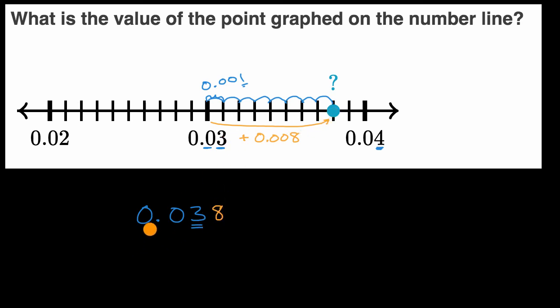So this point right over here is 0.038, or you could view this as 38 thousandths, because three hundredths is 30 thousandths. This is the value of the point graphed on the number line: 0.038.